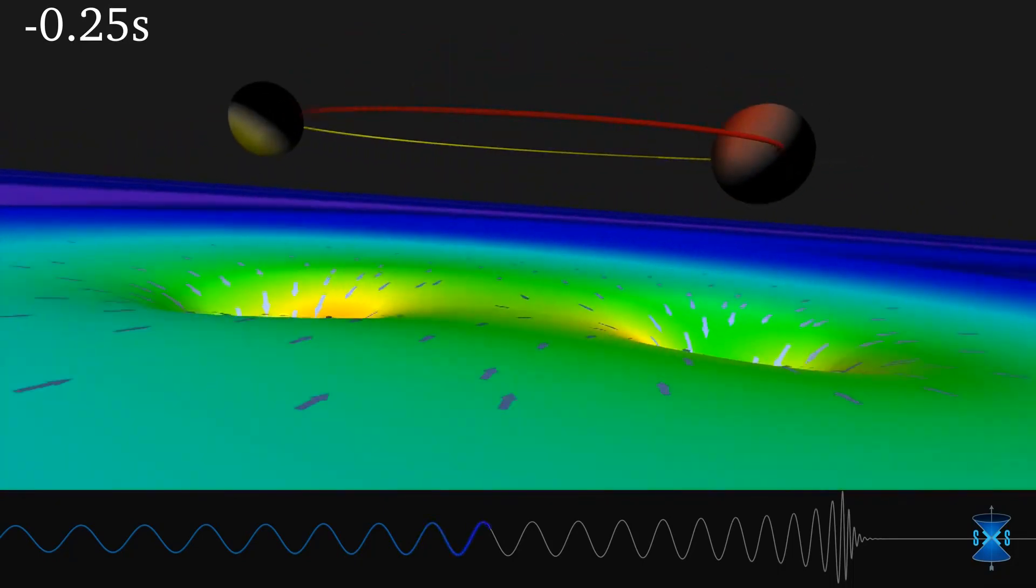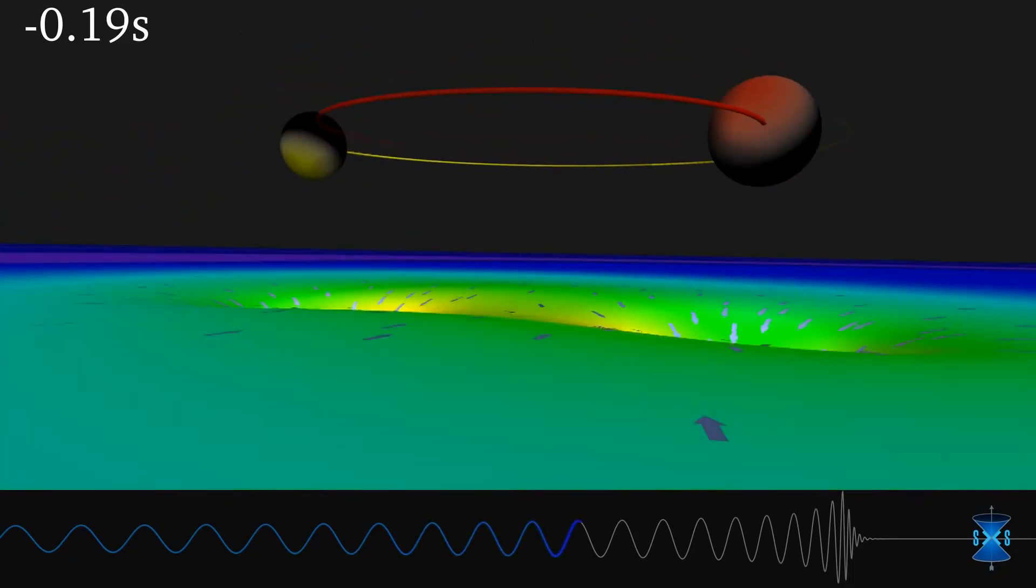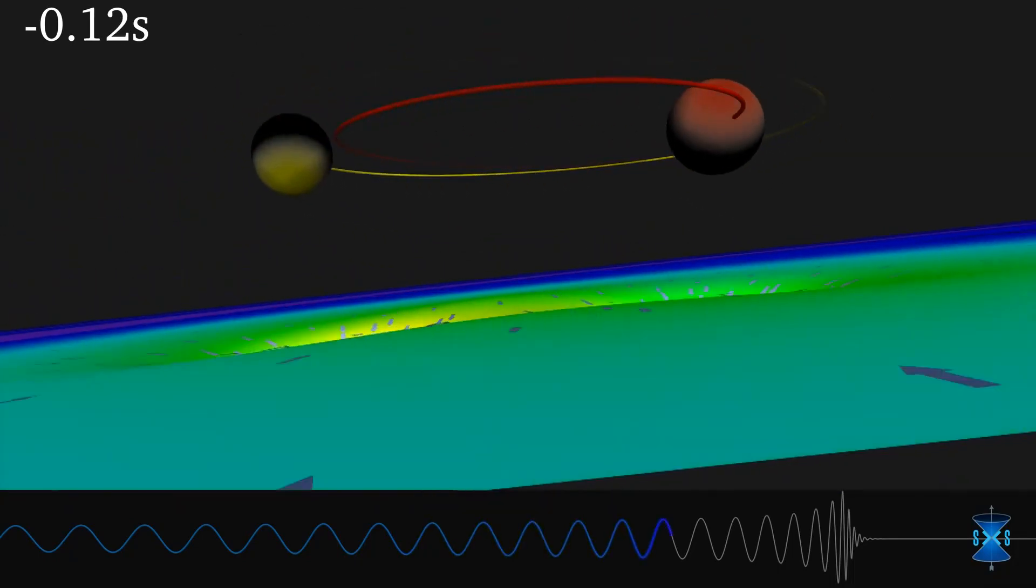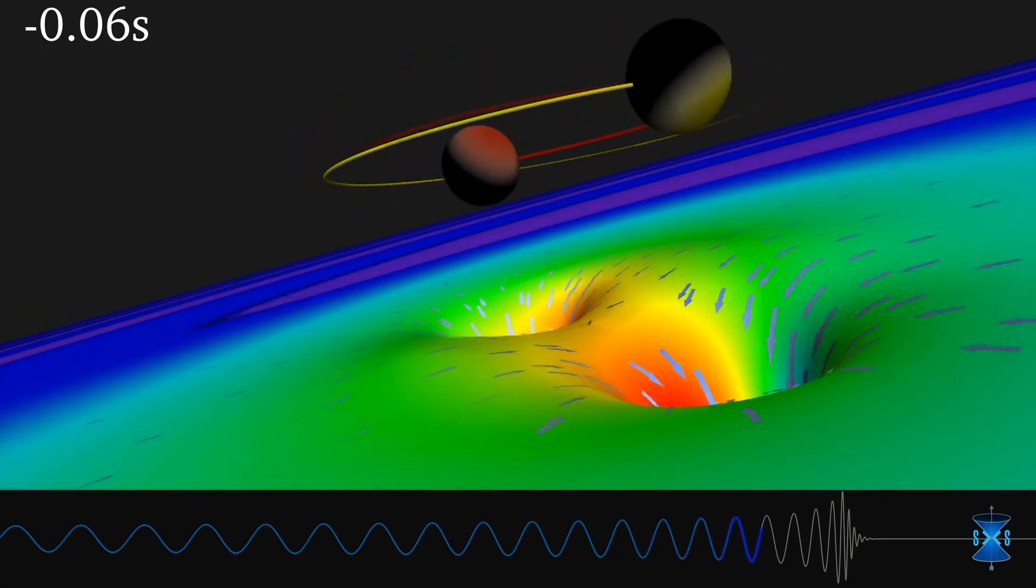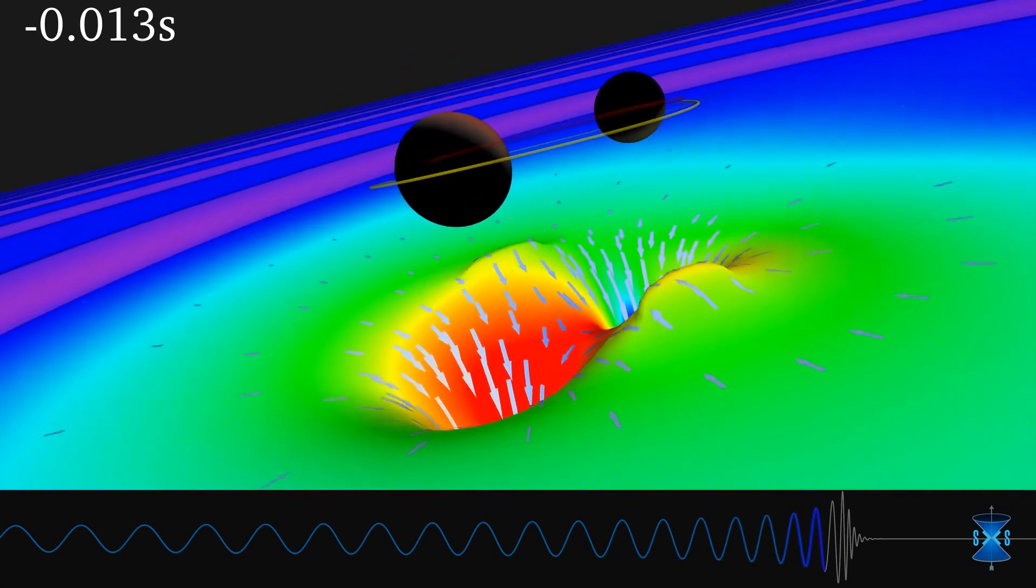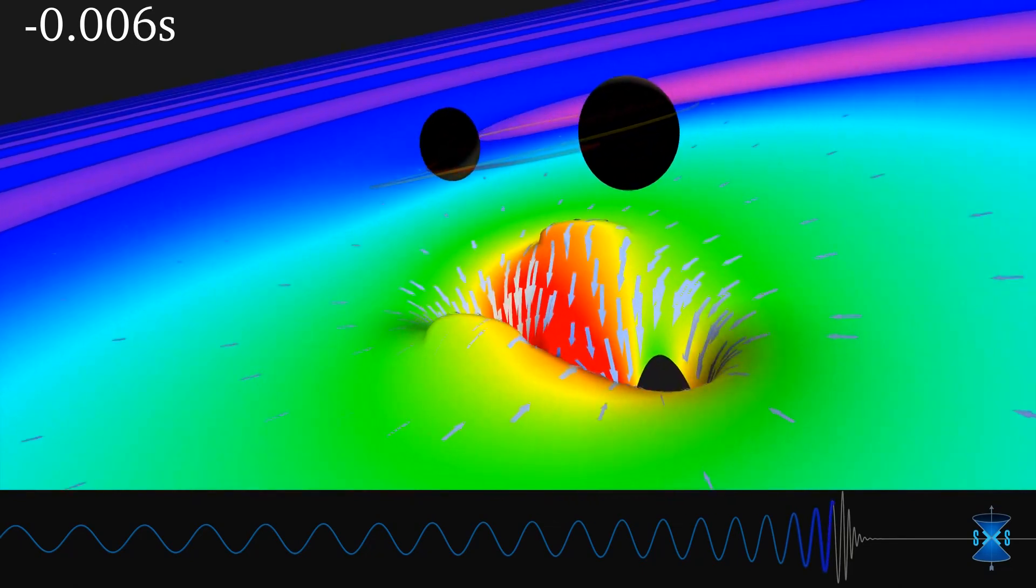The researchers found that the spins of binary black holes may be correlated in a way that can't be explained by current theories of black hole formation. This could mean that there are other factors at play that scientists have never even considered.